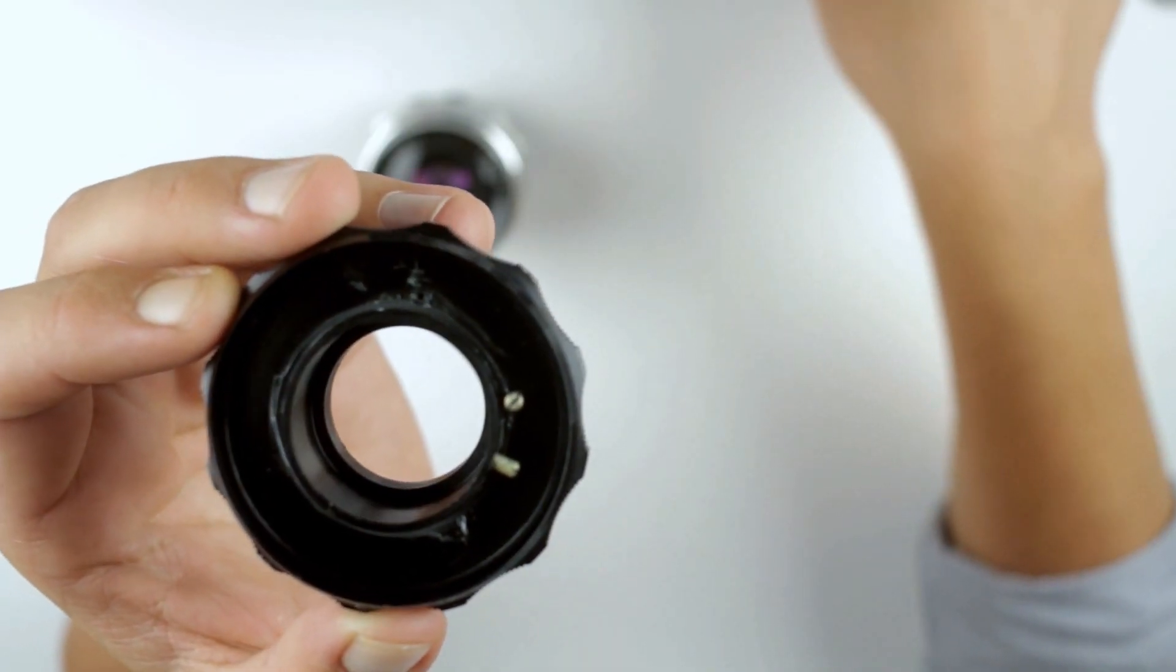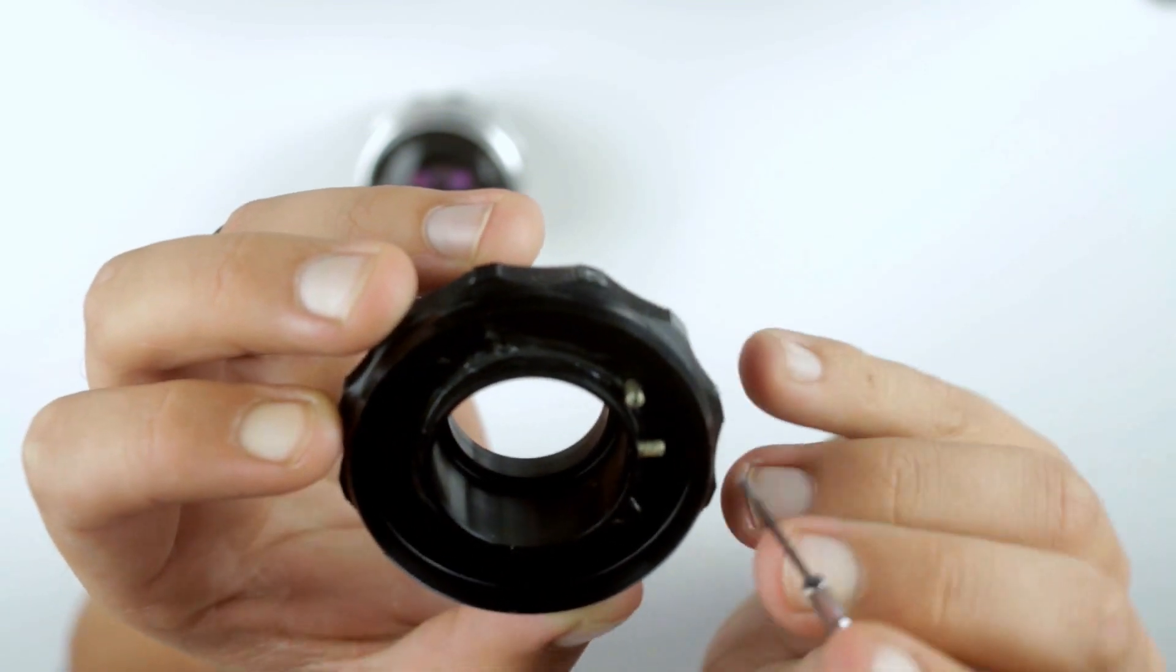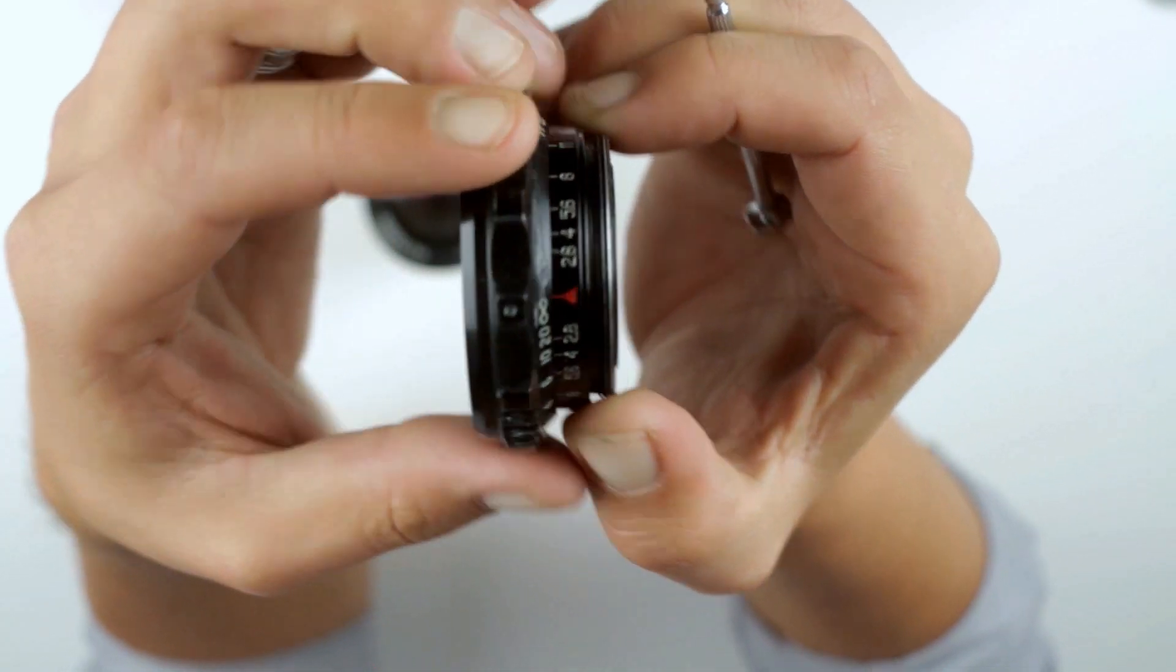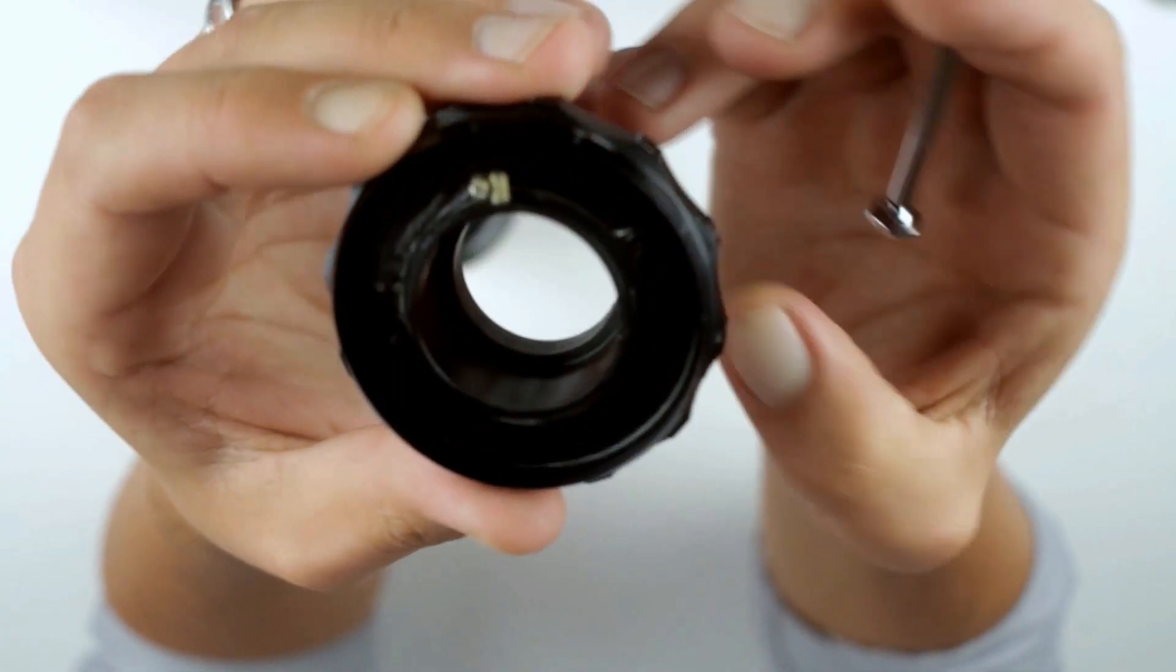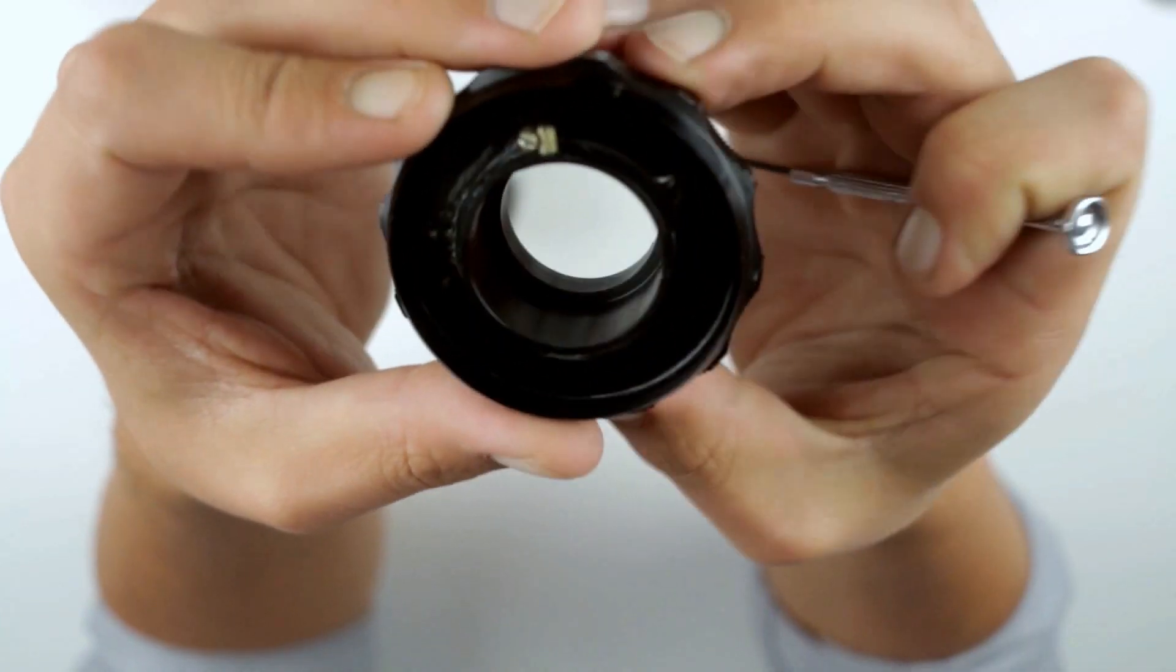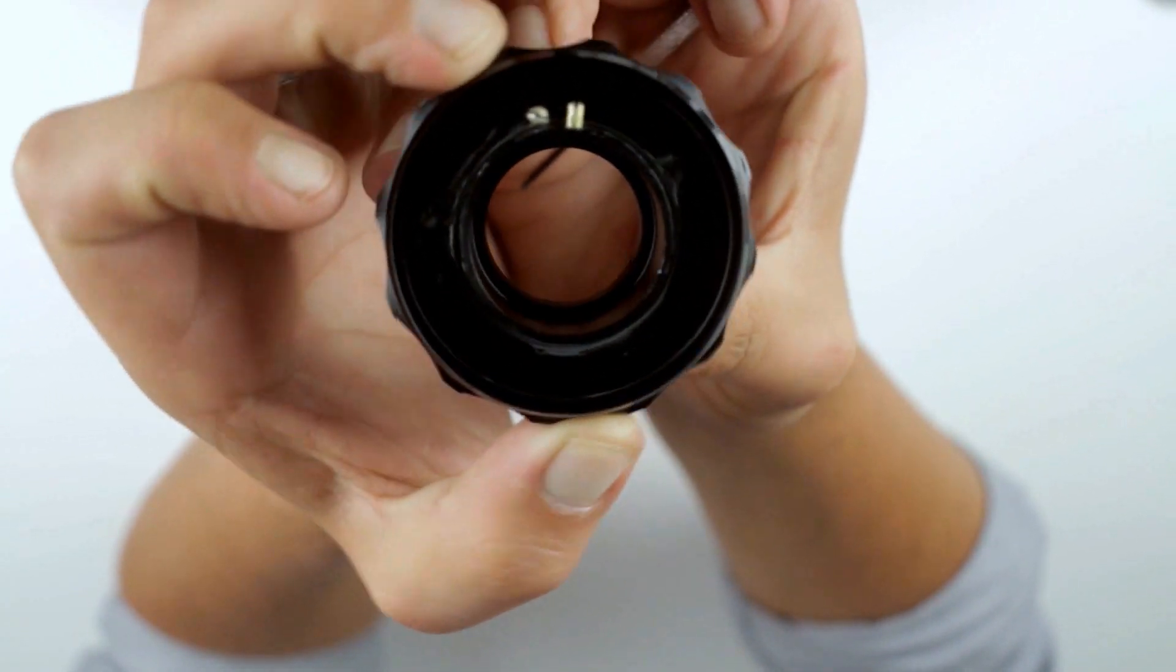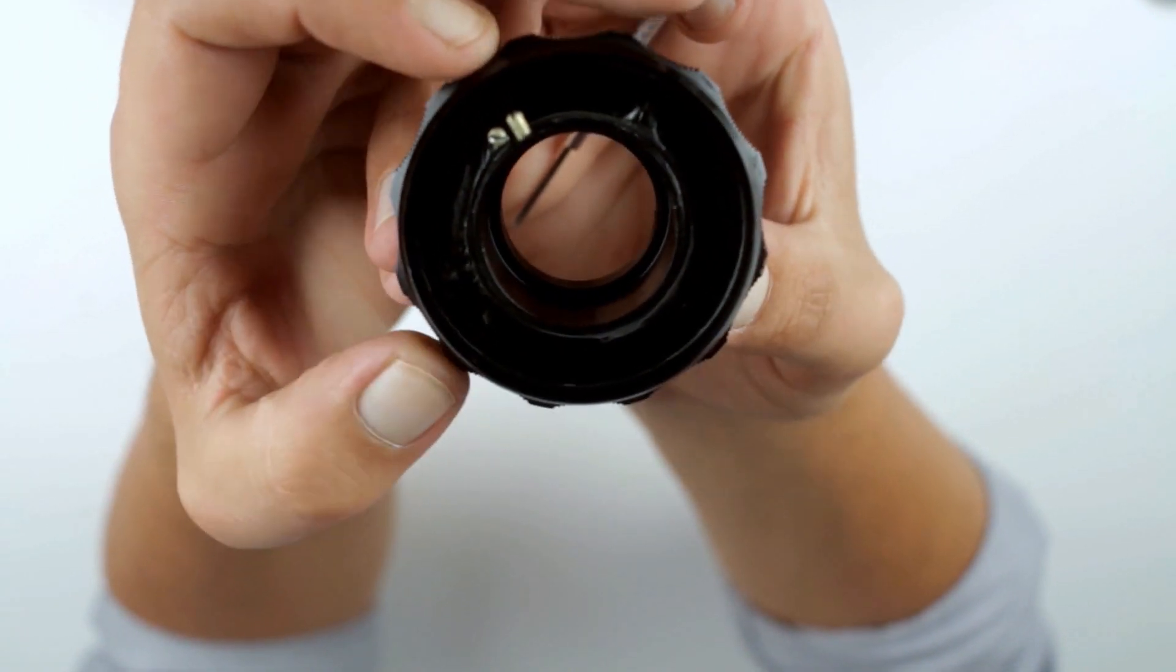So what you have is this is the helicoid, the focusing part. Right now it's on infinity as you can see. Okay, right now it's on infinity. So this little screw is hitting this little screw. It's the thing that stops you from focusing beyond infinity because that's not something you want.